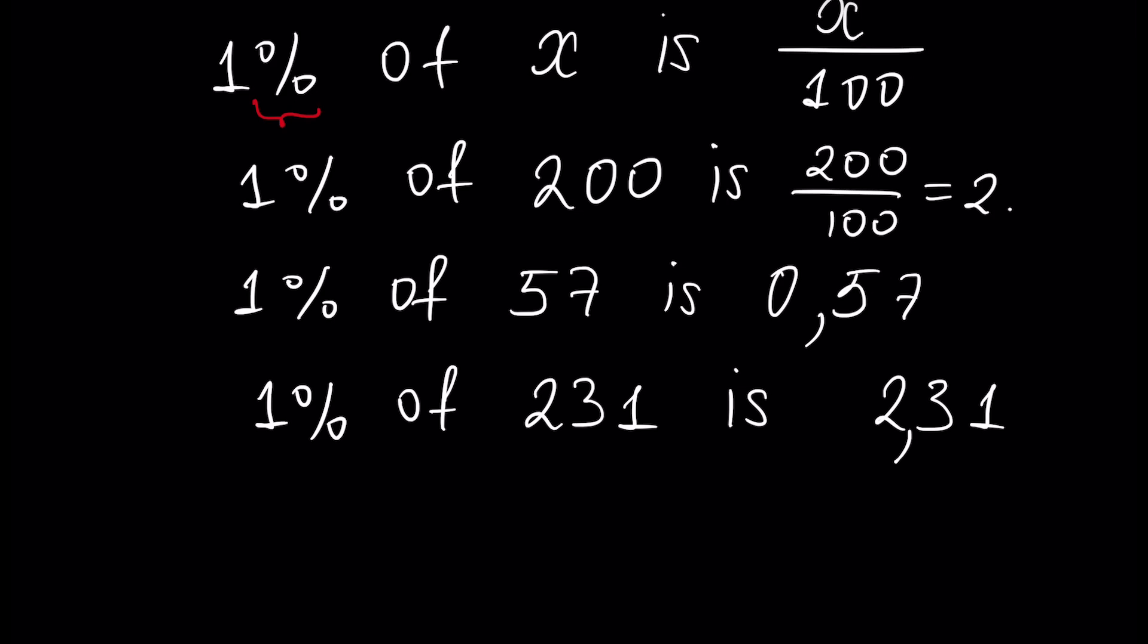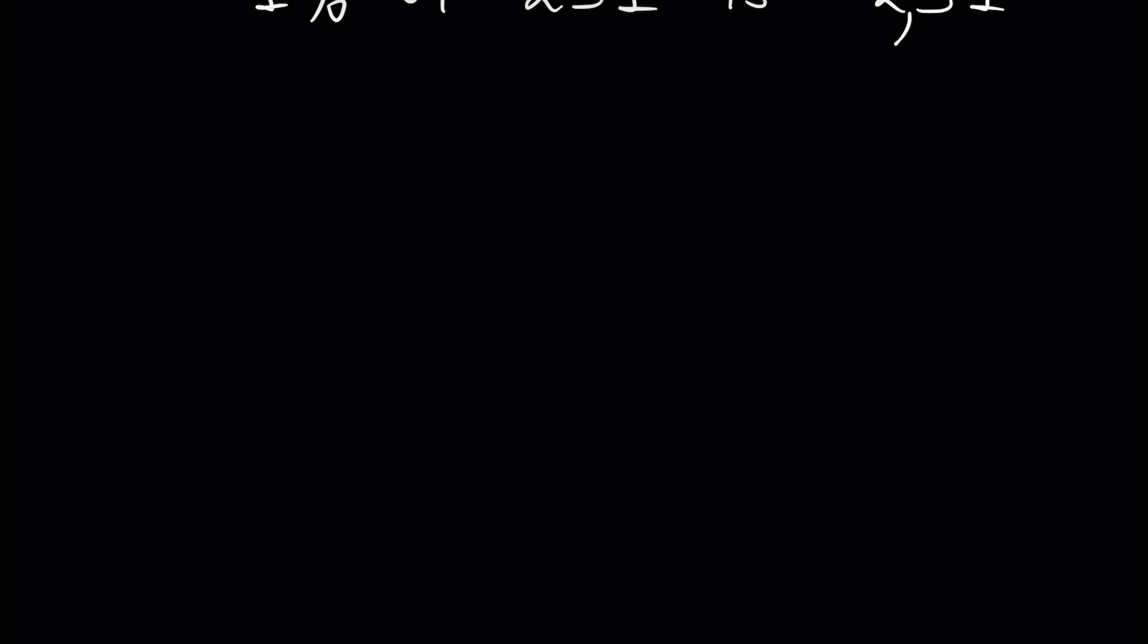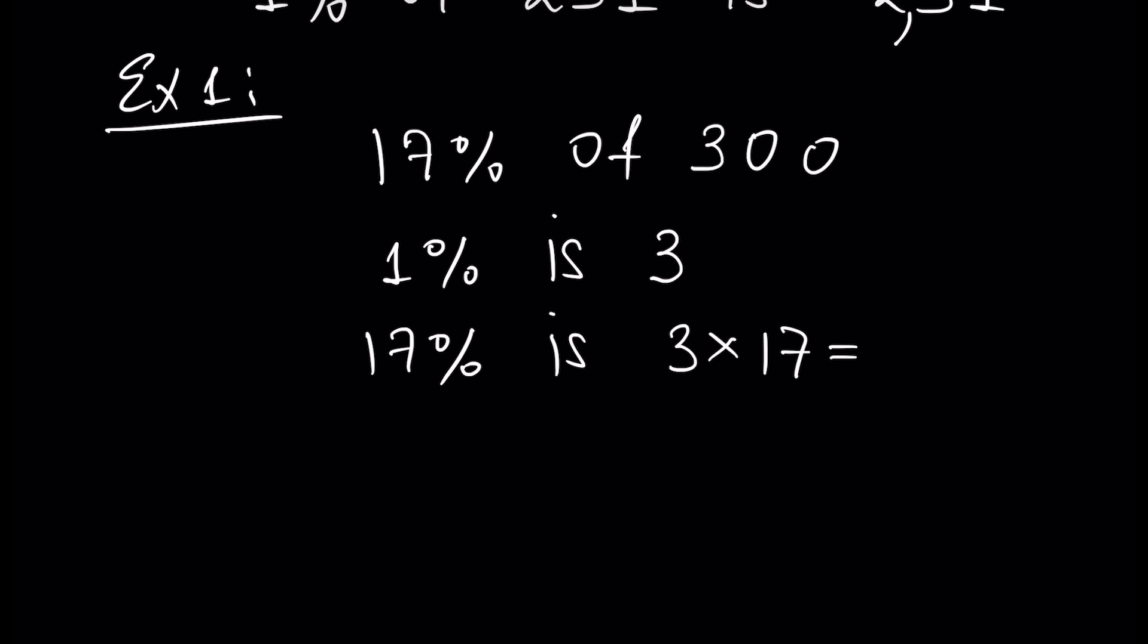Now to calculate any percent of any number, the best way is to calculate 1% of this number first. Let's give some examples for better understanding. Example 1: let's calculate 17% of 300. First, 1% of 300 is 3, and then 17% is just 3 times 17, which is 51. So 51 is 17% of 300. Easy.